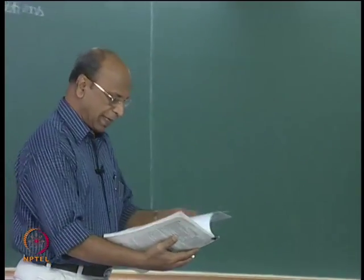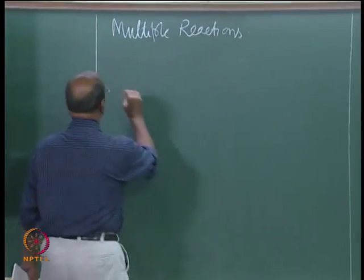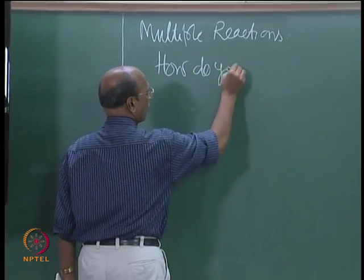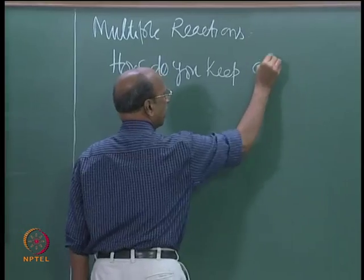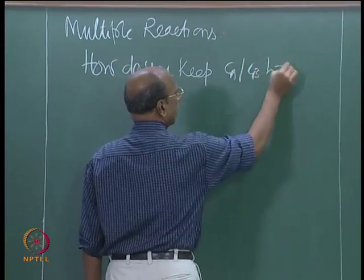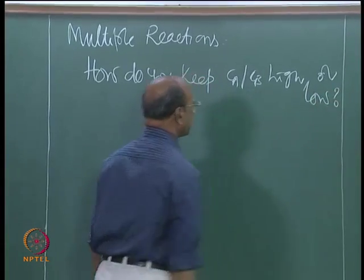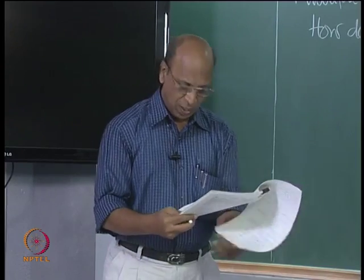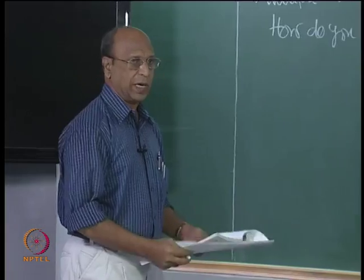Now the question is, how do you maintain these high concentrations or low concentrations? How do you keep CA or CB high or low? We are also imagining that B is one of the reactants. We know that roughly, when you have mixed flow, you will have high possibility and all that. But what are the other possibilities?